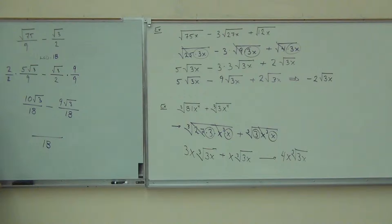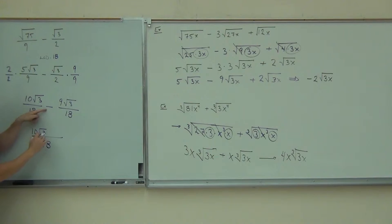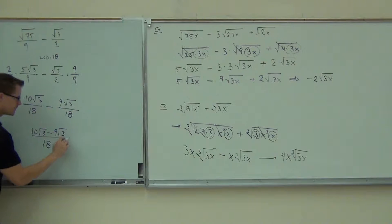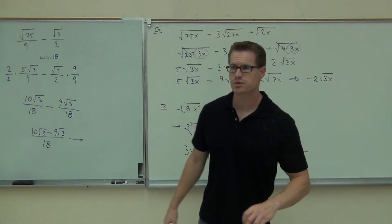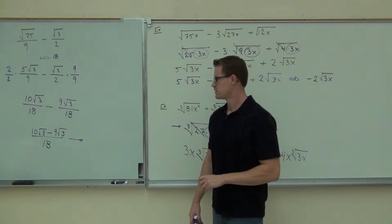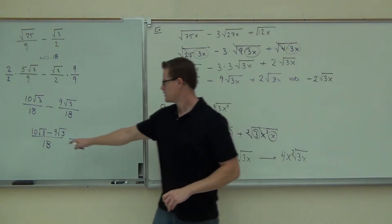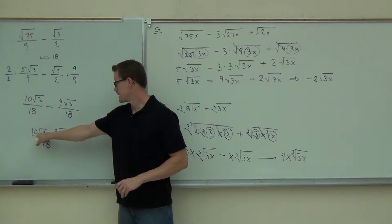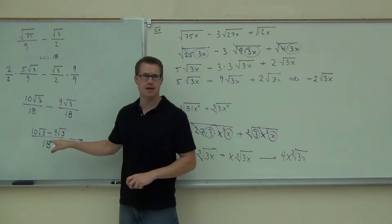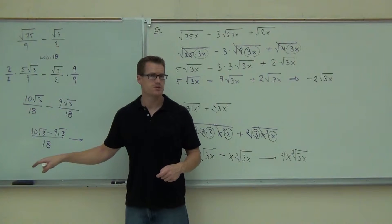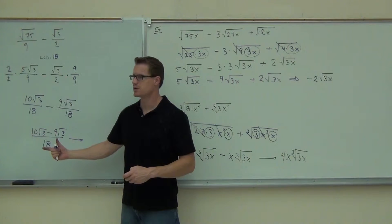On the numerator, we do it just like any other fractions. We have our first numerator, whatever that sign is, our second numerator, and then we try to simplify it. Can you combine those roots? So we got 10 root 3 minus 9 root 3. Do we have the same root? Do we have the same radicand? Because you can combine them. We just do 10 minus 9 — how much do you get? 1. 1 what? Root 3.